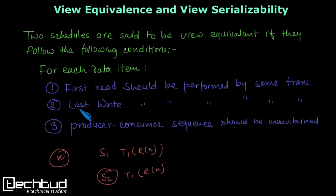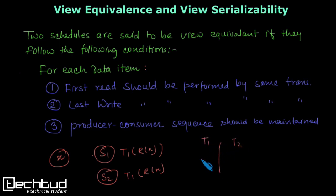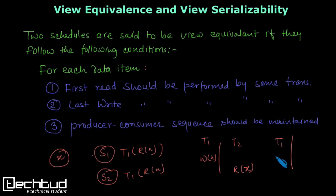The second condition is: the transaction which performs the last write in schedule s1 should also perform the last write in s2. The third condition is that the producer-consumer sequence should be maintained. If a data item x is written by transaction t1 and then read by transaction t2 in one schedule, then in the other schedule also t1 should produce x and t2 should read x.